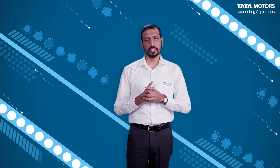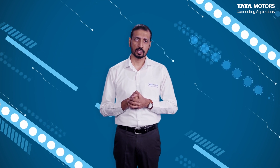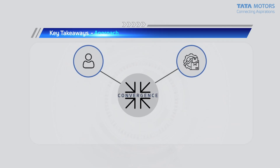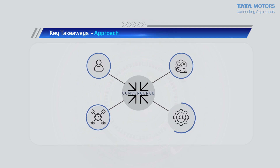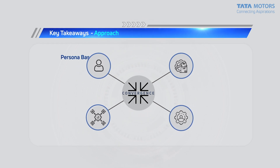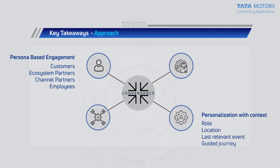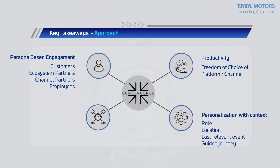How we are able to take the enterprise approach with this evolutionary mindset and deliver an outcome to our end customers — some key takeaways. In any digital environment, there's a persona-based engagement approach that we have to take. We adopted that very judiciously — looking at our customers, ecosystem partners, channel partners, and even our employees — adopting our products in such a way that they are engaged with a persona. We also have a focus on personalization with context, context being key in any digital product. Productivity is a key focus area, specifically around freedom of choice.